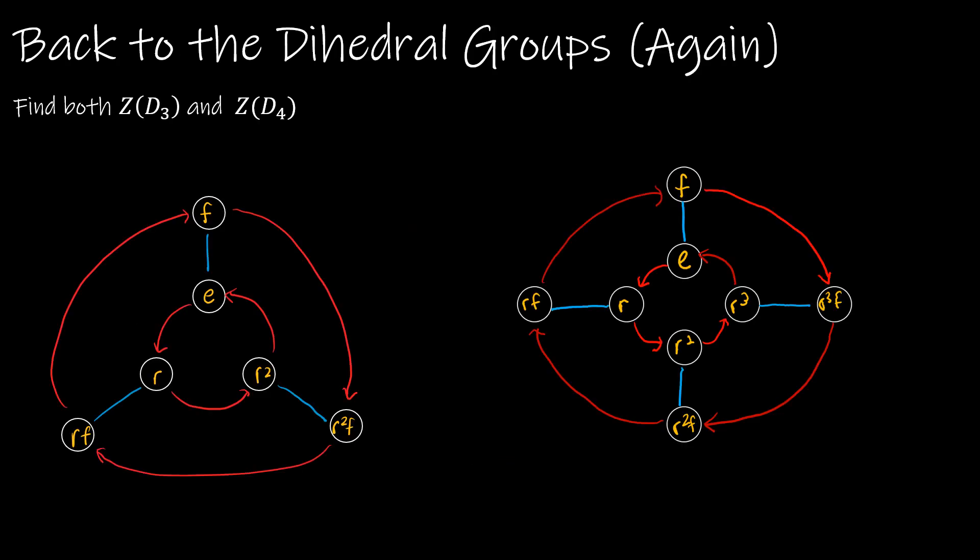Since we've already refreshed our memory on the dihedral group D4, let's look at both D3 and D4 and see if we can determine the center of each group. So we already know that the center is going to include the identity, and that's for each group. And that makes perfect sense, because I can choose any element in either group, say R squared. It makes complete sense that E·R squared would be the same as R squared·E. We know that the identity doesn't do anything. And so whether I perform the identity at the beginning or nothing at the end, it's not going to change. So we know for sure that's true.